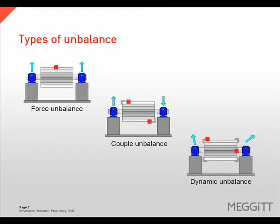There are three types of unbalance: force unbalance, couple unbalance, and dynamic unbalance. All three types exhibit vibration at 1 times rotational speed. To distinguish between them, we need to use phase readings. The phase is represented in the presentation by the turquoise arrows.